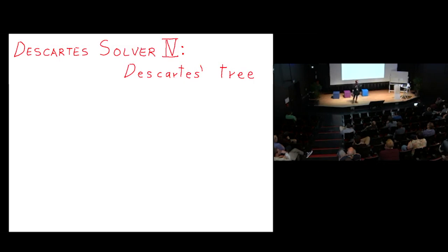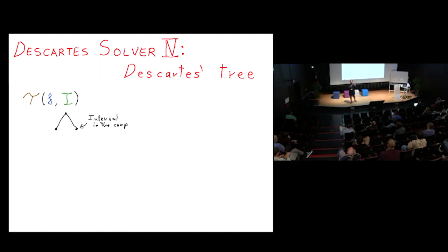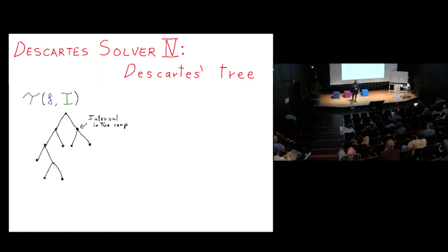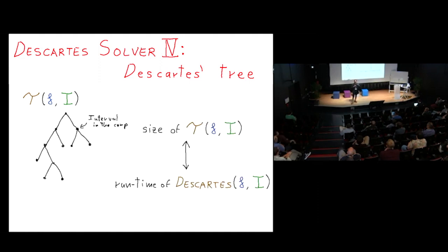A useful visualization is the CAR tree. Starting with the initial interval, each subdivision creates child nodes. The nodes are exactly the intervals that appear in the algorithm's computation. The size of this tree equals the runtime of the algorithm, so controlling the tree size means controlling the runtime.